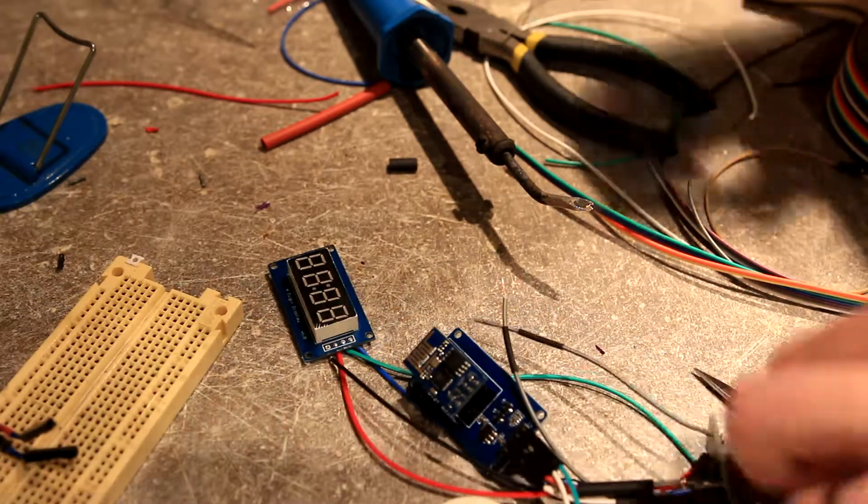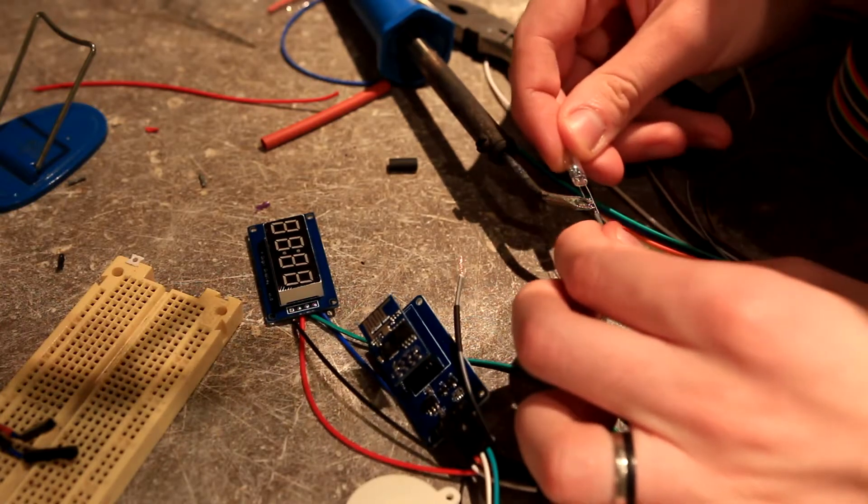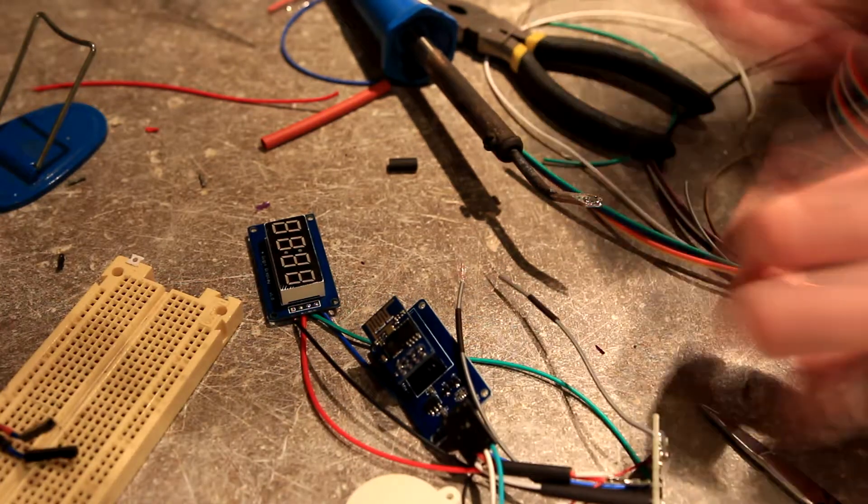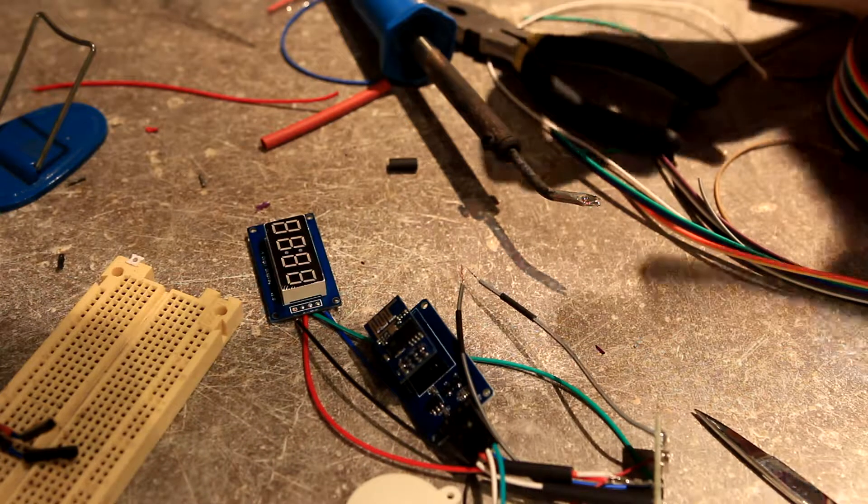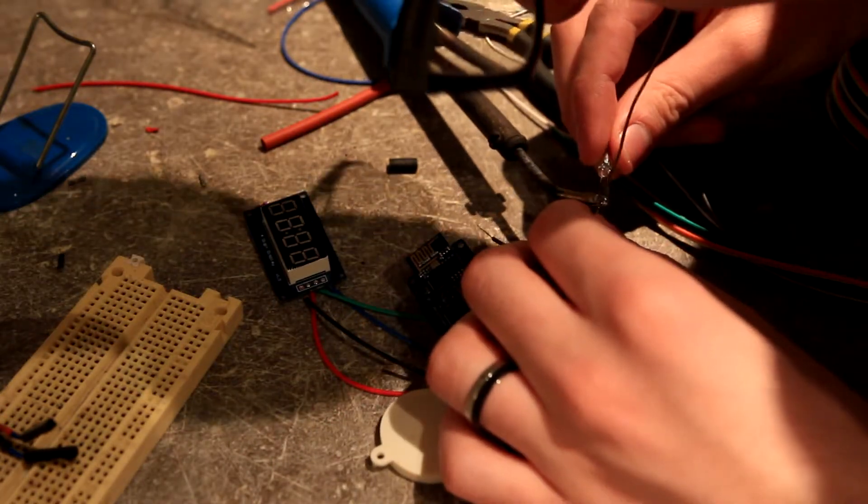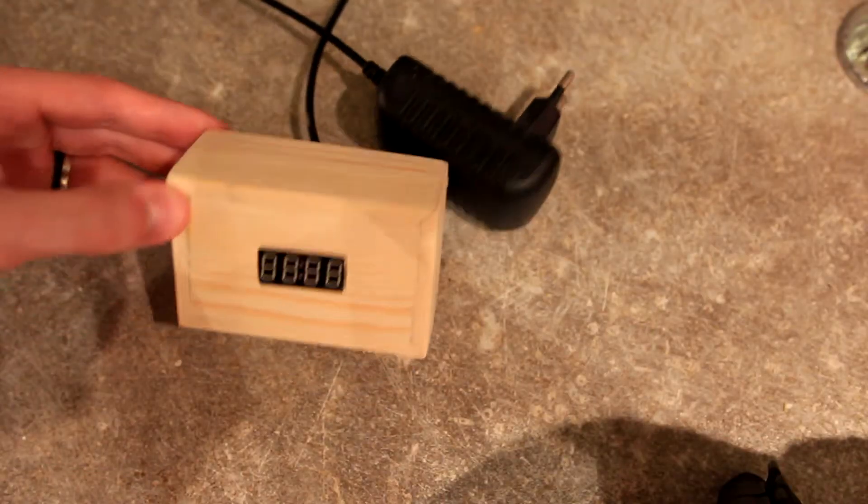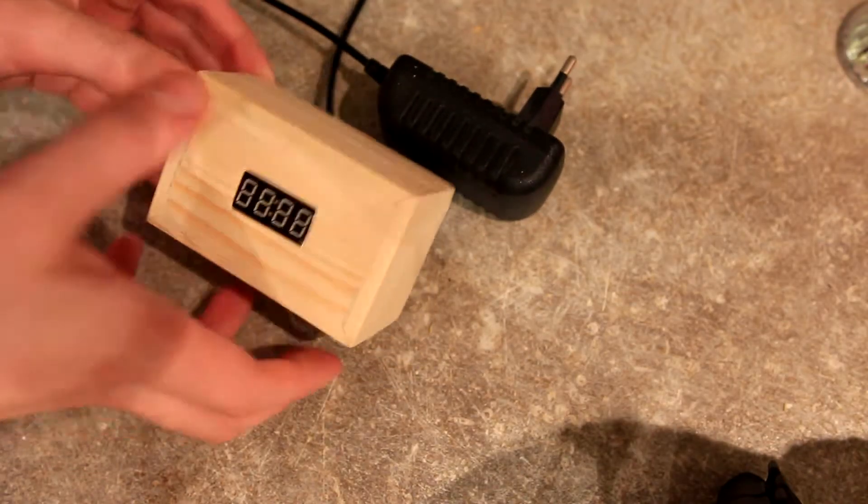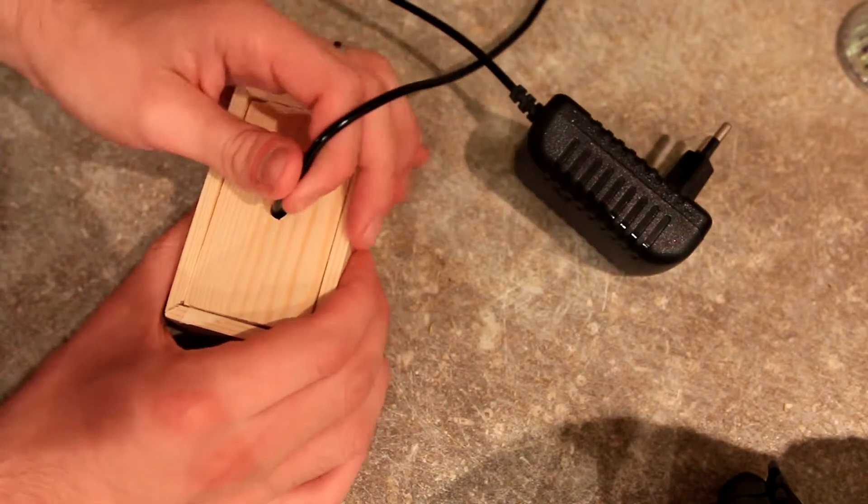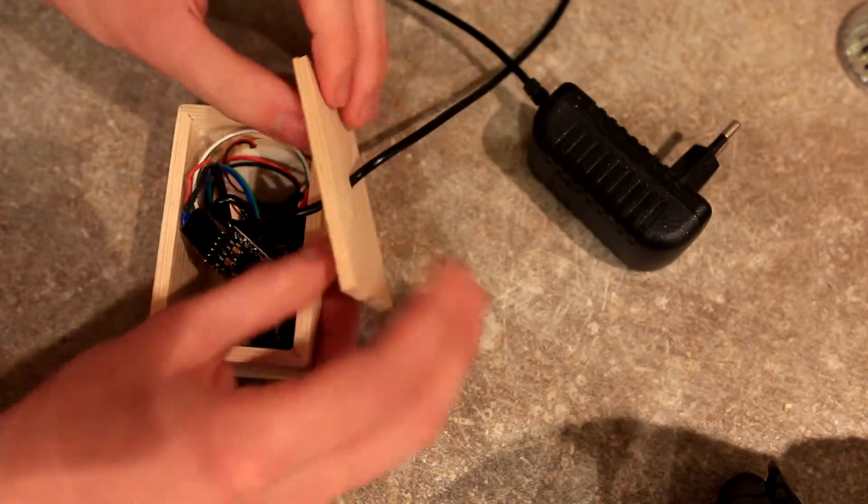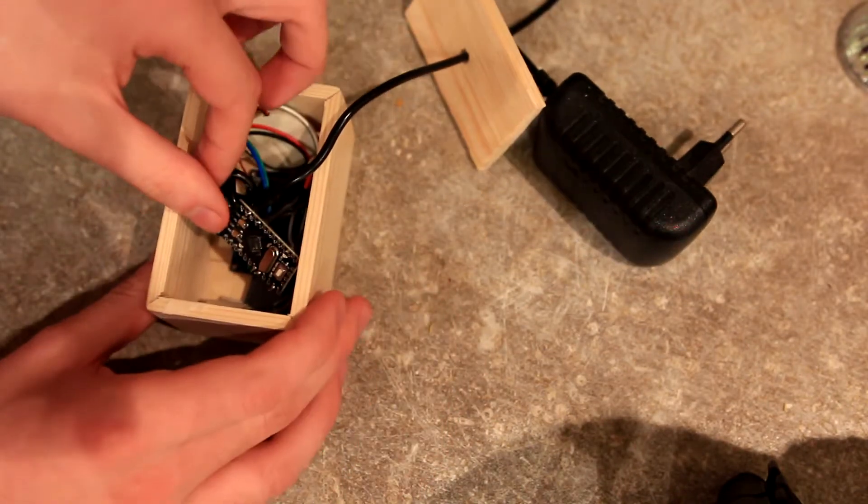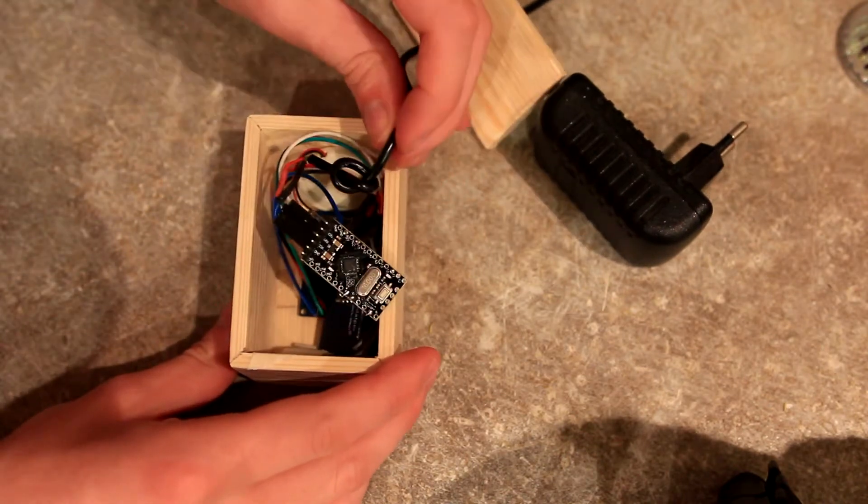While I soldered all the components together, I made sure to use shrinking tubes everywhere I could to make sure that there would not be any short circuits while everything is packed in the small box. And that's it. That's the final product. Everything fits into the box. The mercury switch is taped to one side of the box and it is used to know if it is upside down or not.